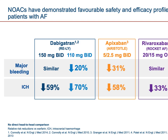Dabigatran is available in two strengths: 110 and 150 milligrams, used twice daily. When comparing using standard clinical trial data — the RE-LY trial for dabigatran, ARISTOTLE for apixaban, ROCKET AF for rivaroxaban, and ENGAGE AF TIMI for edoxaban — we can evaluate these molecules across key parameters.